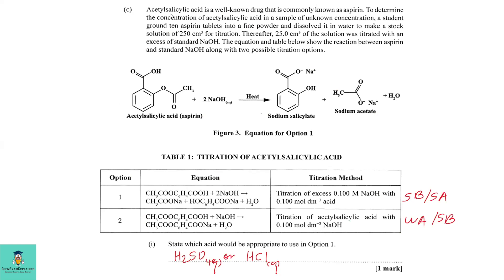Part C: acetylsalicylic acid is a well-known drug commonly known as aspirin. To determine the concentration, a student ground 10 aspirin tablets into a fine powder and dissolved it in water to make a stock solution of 250 cm³. Thereafter, 25 cm³ of the solution was titrated with an excess of standard sodium hydroxide solution. The reaction forms sodium salicylate and sodium acetate plus water.